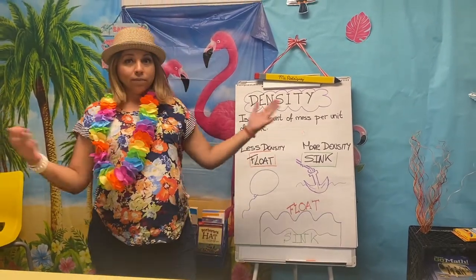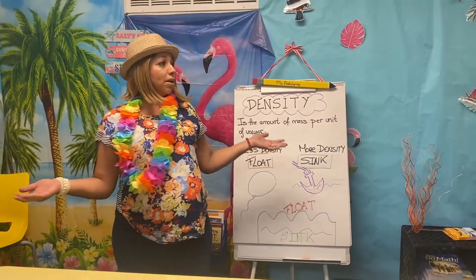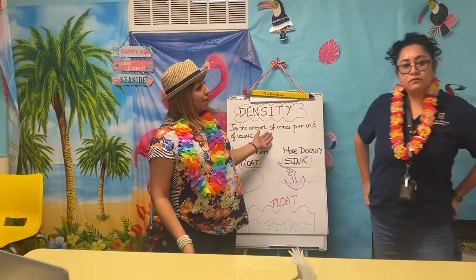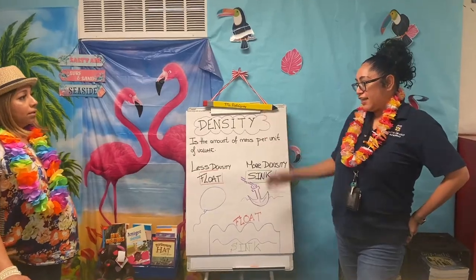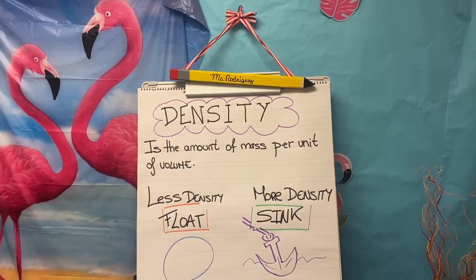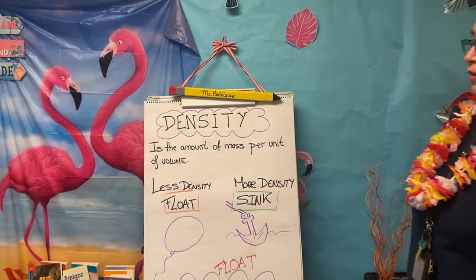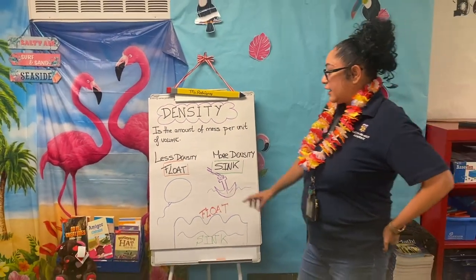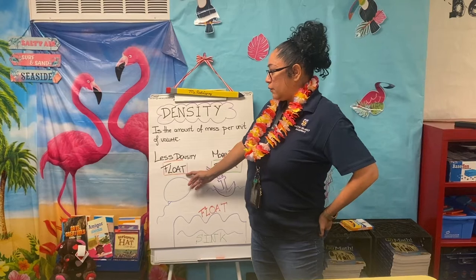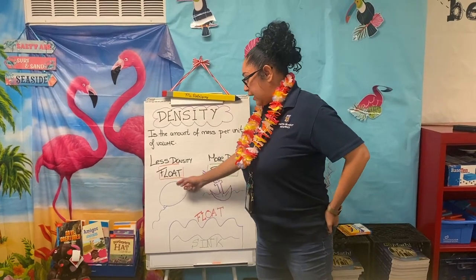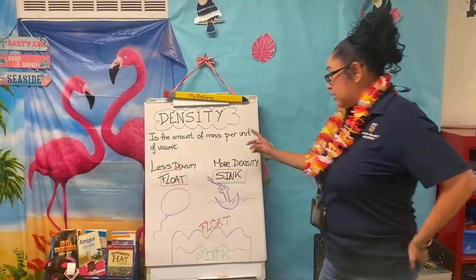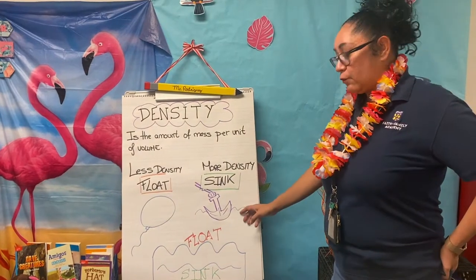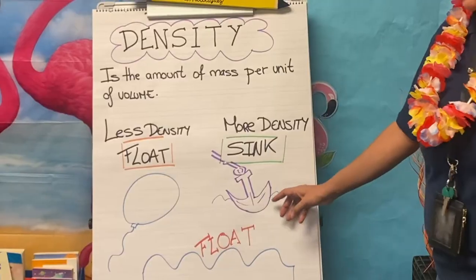So that's what we're going to be talking about this week. Ms. Alvarado, do you want to explain that to them in Spanish? Yes, we're going to be talking about density — it's the amount of material per unit of volume. Here we have an example: less density will float, like the globe. If there is more density, it will sink, like the anchor.